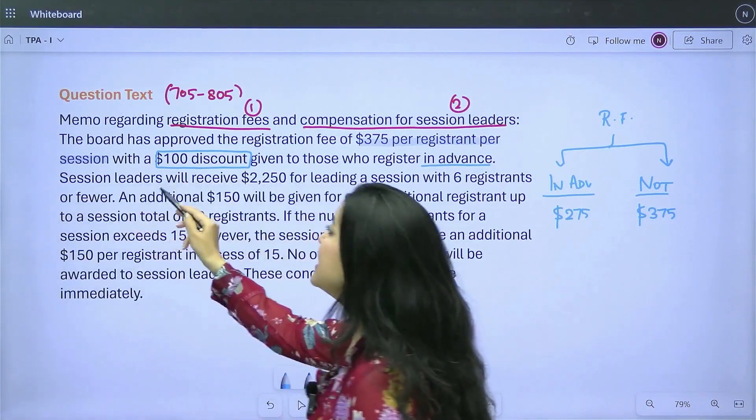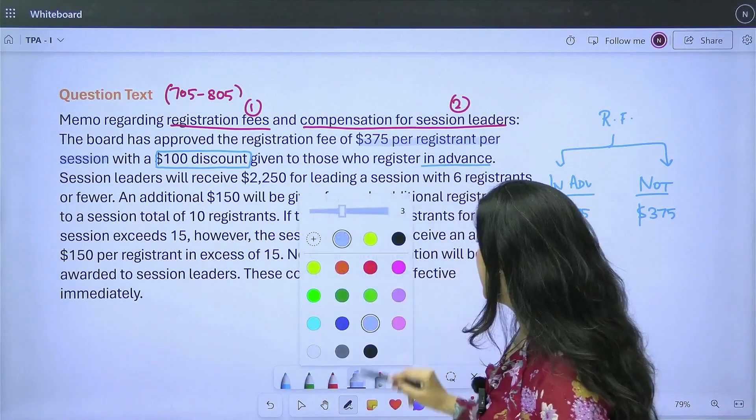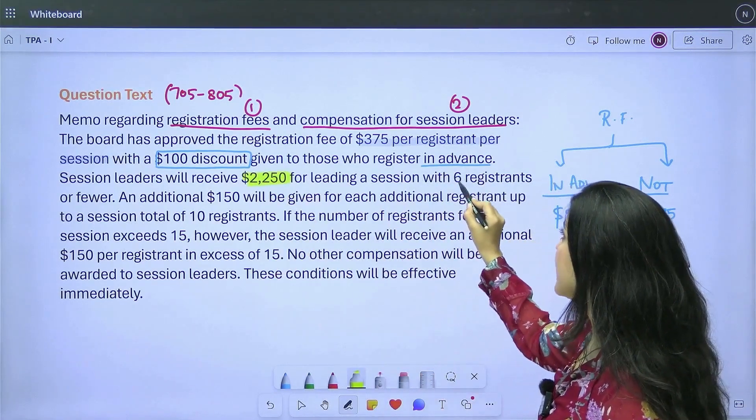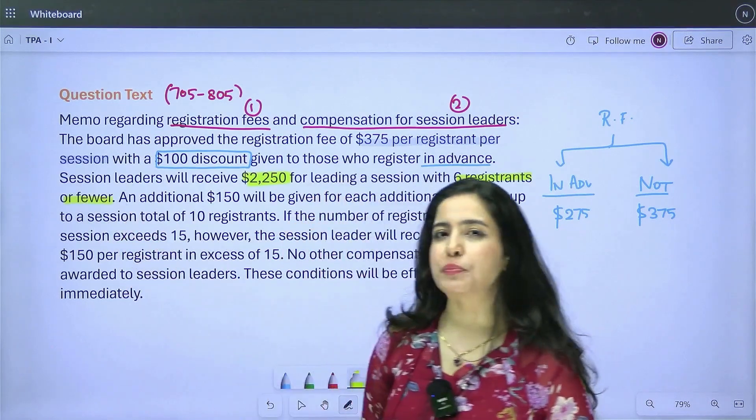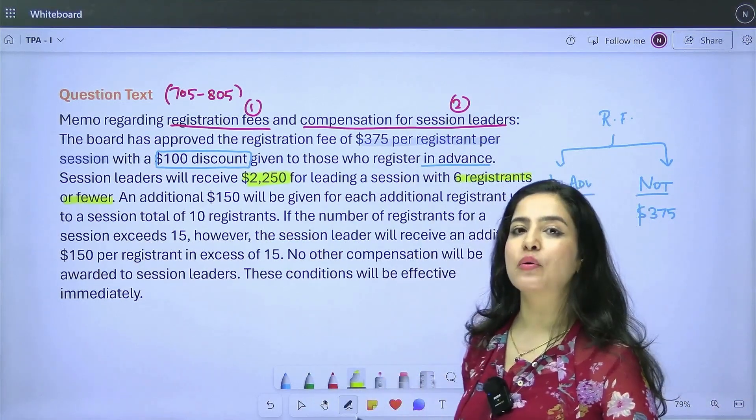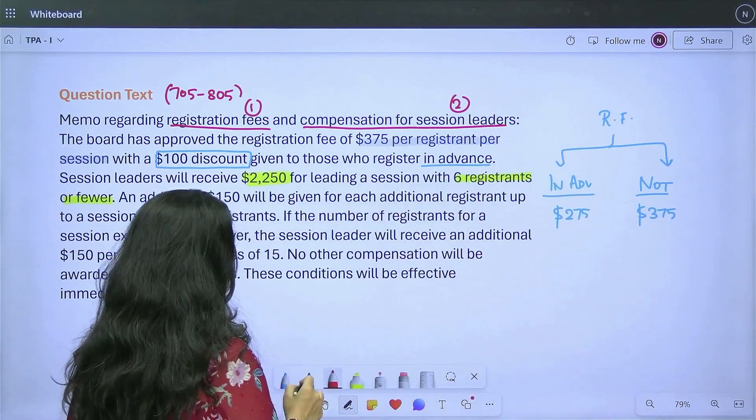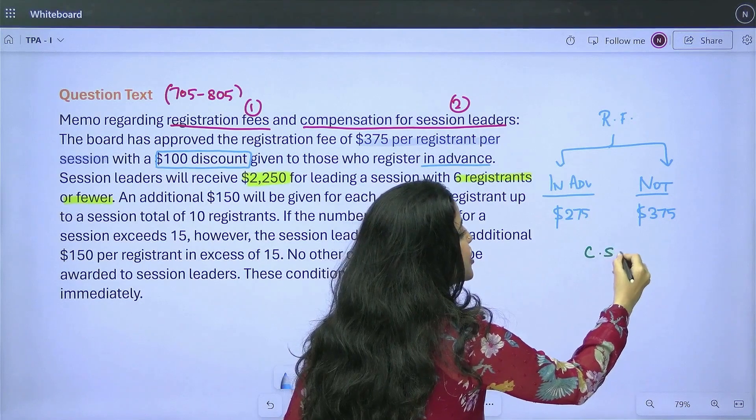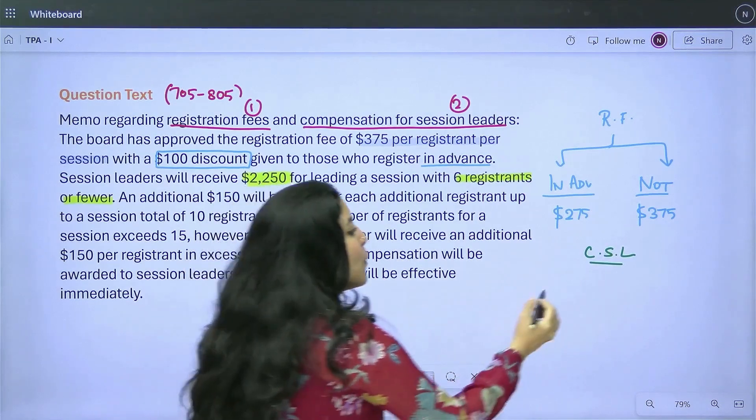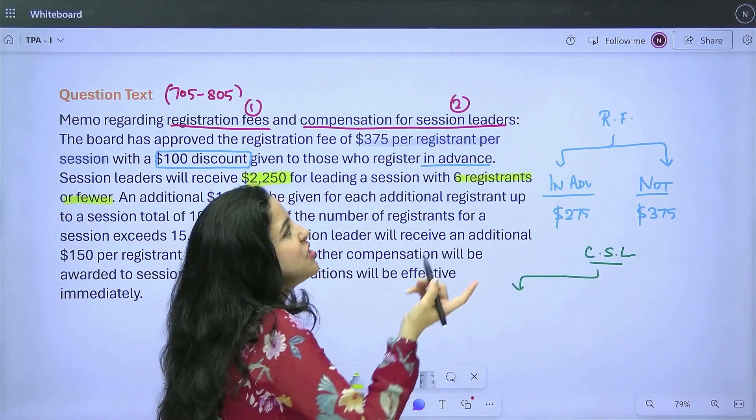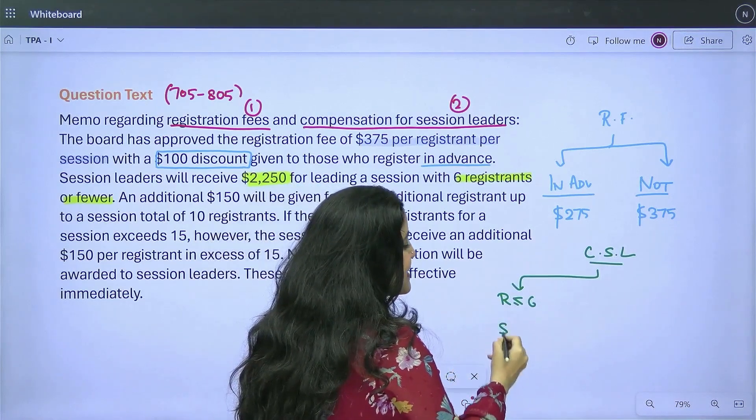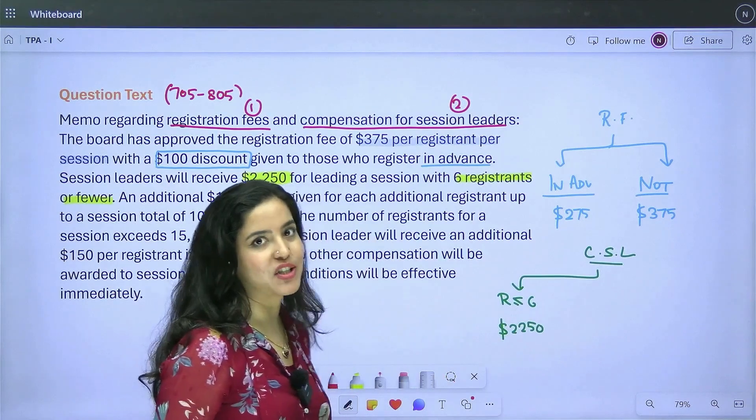Now let's read further. Then it talks about session leaders. So probably now we're going to go into the compensation bit. The second thing, I like this in a different color. Session leaders will receive $2,250 for leading a session with six registrants or fewer, which probably means that as the number of registrants will change, this session leader compensation will also change. So till now, I've only found out information about one specific situation. Let's start noting this down. So now I'm talking about the compensation for the session leaders, CSL. You don't have to write everything when you're creating your notes. It is something for you to understand. Now what is happening is I'm saying that if the number of registrants, let me just call that R. If my number of registrants is less than equal to six, six or fewer, in that case, the session leader is getting $2,250. This is the compensation.